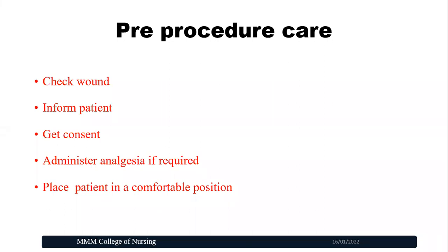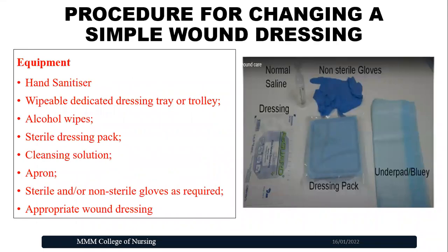Pre-procedural preparations include: check the wound without removing the dressing material — look for any soaking or drainage and assess surrounding skin for redness, swelling, or signs of inflammation. Inform the patient you are going to perform the dressing and get consent. If the patient expresses pain, administer analgesia if required. Place the patient in a comfortable position before the procedure. Once all pre-procedural care is done, proceed to arranging the articles for the procedure.